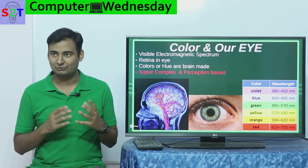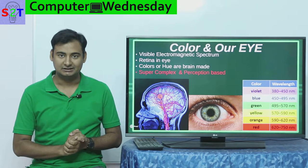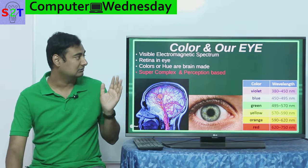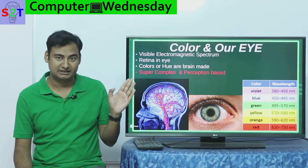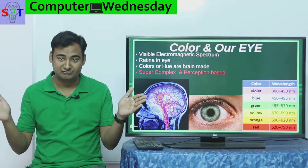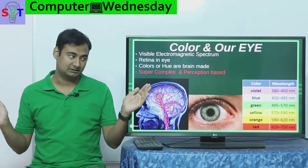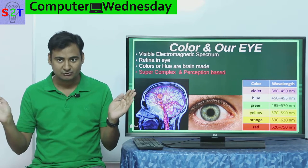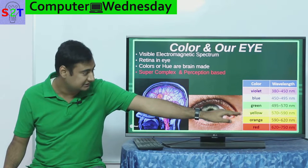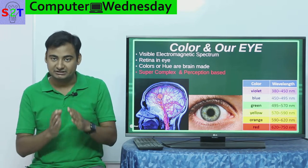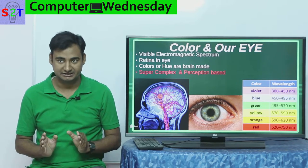Before we understand how computers handle this we have to understand what color in our eye does to show us colors. The whole concept comes from photons and the visible electromagnetic spectrum. The electromagnetic spectrum is very wide — it goes from gamma rays all the way up to FM radio. Within that wide range there is a narrow piece that starts from roughly 380 nanometers to 750 nanometers. That range is what we call the visible electromagnetic spectrum.